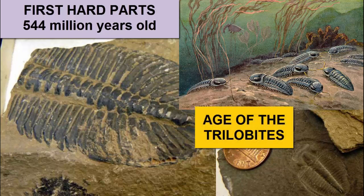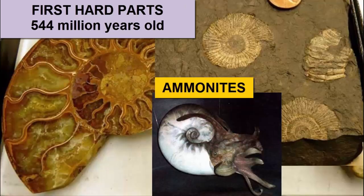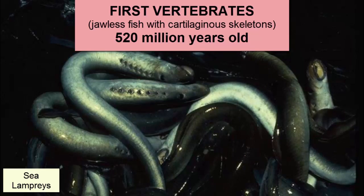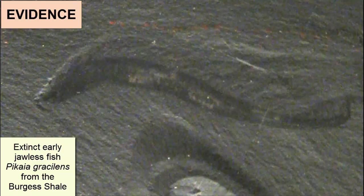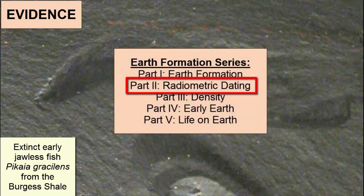It was also the beginning of the age of the trilobites, crab-like animals with exoskeletons that scuttled across the sea floor. Ammonites came next, a nautilus-like cephalopod — imagine a giant octopus-like organism living in an ornate hard shell and floating at various depths within the water column. The first vertebrates, jawless fish with cartilaginous skeletons, evolved about 520 million years ago. The evidence for this timeline comes from fossils we find in rocks that we date through radiometric dating.